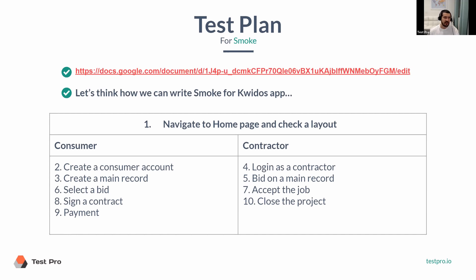Smoke testing for that case would be: login, probably, because you can't do anything without being logged in. Then, based on the user role — we have buyers and sellers. For sellers, it will be: login as a seller, list your item, once someone purchases it you ship it and get your money. For buyers, it's: login as a buyer, search for something, add it to cart, continue with checkout — provide address, payment options, and so on. Once you receive the item, leave a review or some confirmation of receiving it. You'll probably come up with around 10 to 15 test cases, not more than that.